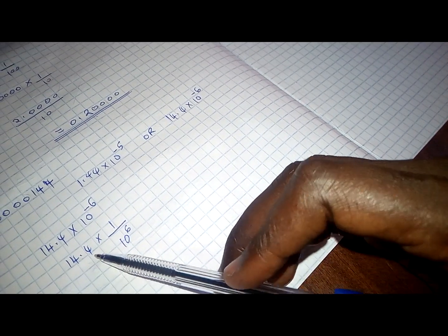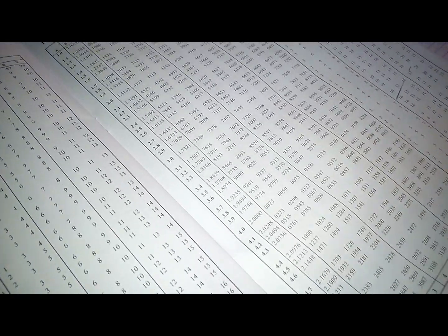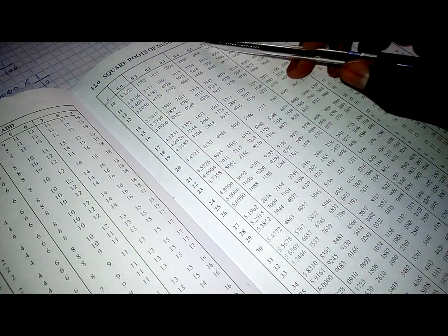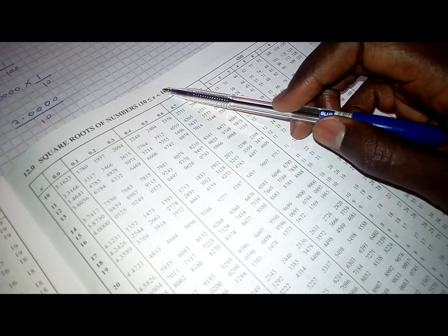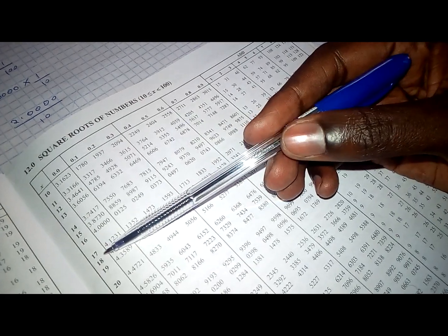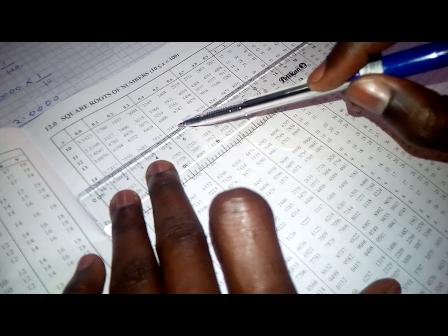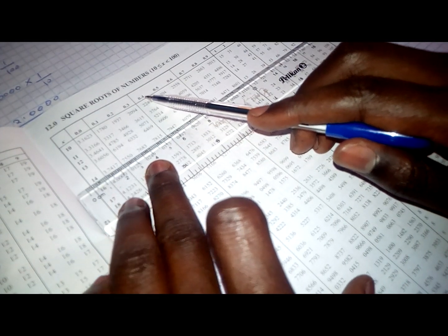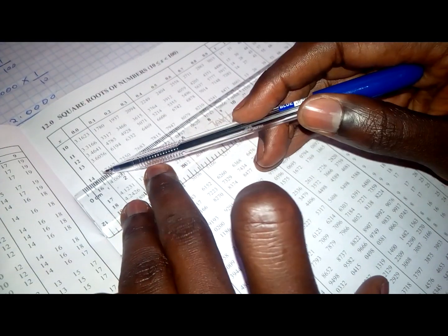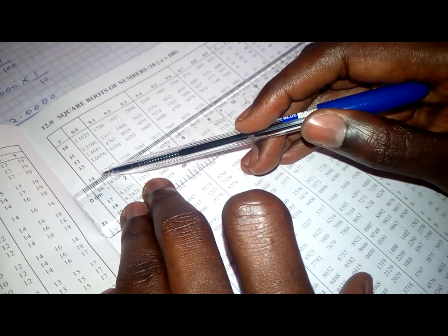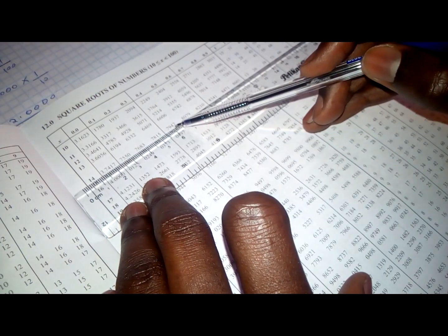And how do we get this square root? So, because it lies in the range between 10 to 100, 14.4 actually is in this range. So, we look at it here. So, we have 14.4. This is 14.04 is the 0.4 that we are looking for. And the leading value here is 3. So, we are going to have 3.7947.